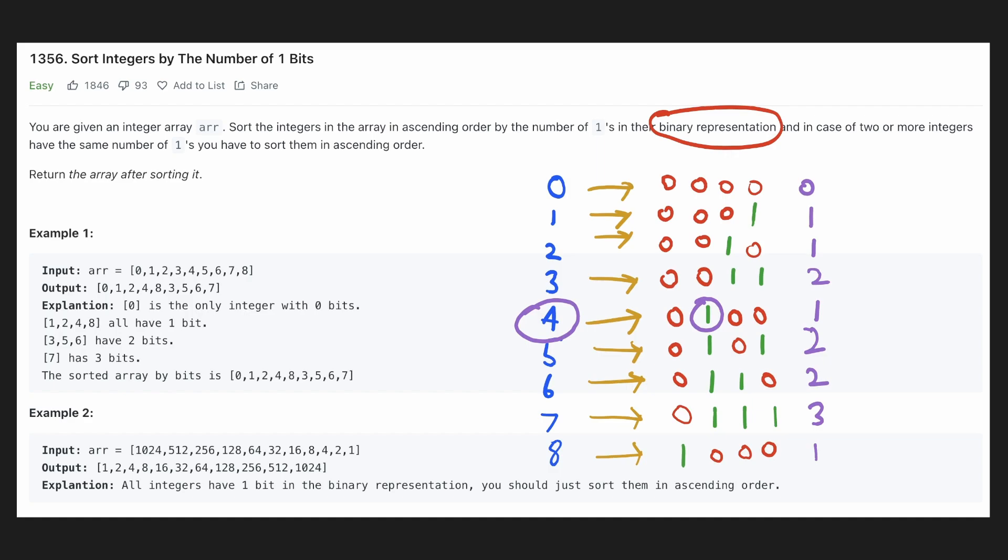And since we have to sort all these numbers starting from the least number of ones, we are going to start with zero ones. We have only one such number and we can see that it appears first in the output. Now we are going to try to find all the numbers with only one bit set and we have 4 such numbers: 1, 2, 4 and 8. Since there is a clash they will appear in the output in sorted order.